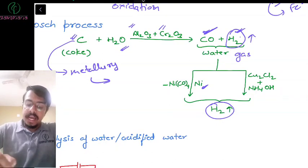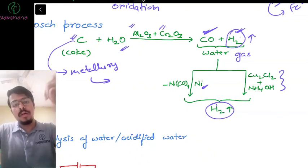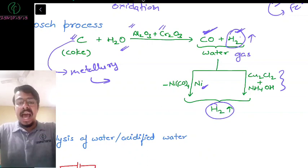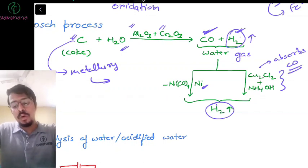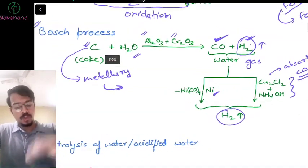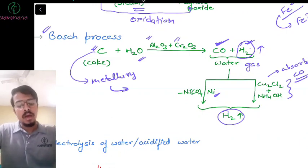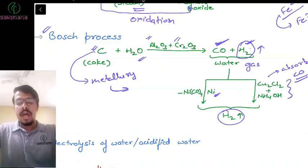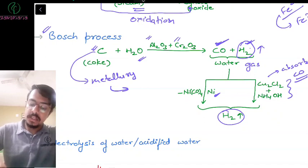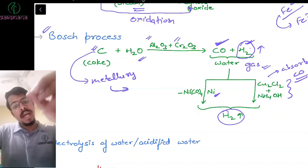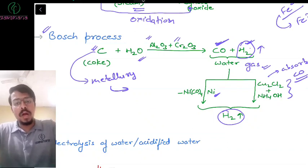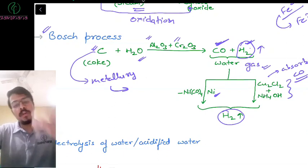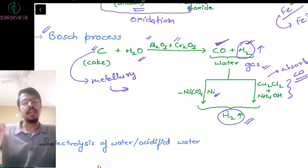The third industrial method is electrolysis of water or acidified water. H₂O dissociates into H⁺ and OH⁻. Remember CNR: Cathode, Negative, Reduction. At the cathode (negative), H⁺ ions are attracted and get reduced to form H₂ gas. At the anode, OH⁻ gets oxidized to OH free radicals, which combine to form a peroxide, and that unstable peroxide decomposes to give H₂O and O₂ gas.